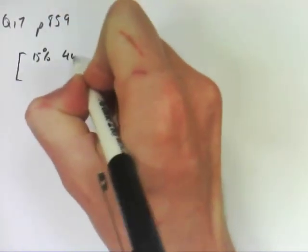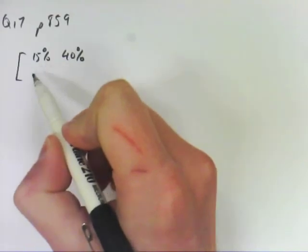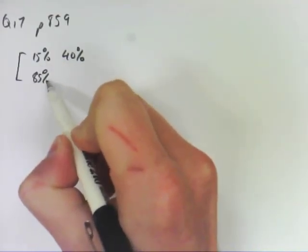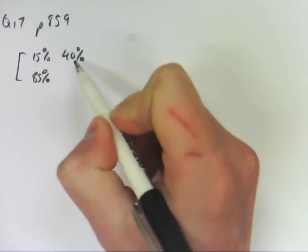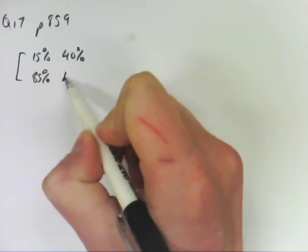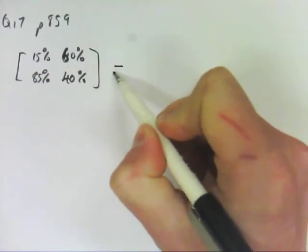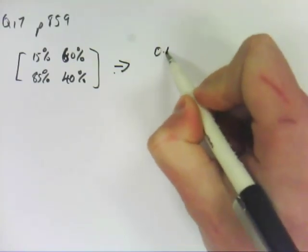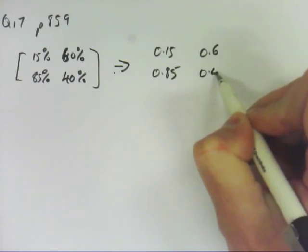So 15%, 40%. That means if it was late on the first day, there is an 85% chance it will be on time the next day. If it was late one day, it was 40% chance it will be late the next day. So that probably should be there, and then that will be 60%. So as a transition matrix, that is 0.15, 0.85, 0.6, and 0.4.